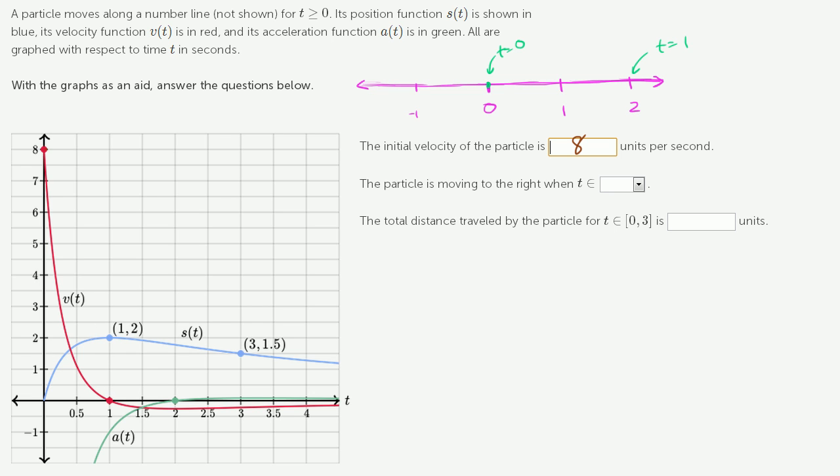We're moving to the right when v of t is greater than 0. When v of t is less than 0, we're moving to the left. When v of t is equal to 0, we're stationary. So when is v of t greater than 0?